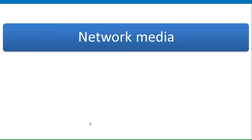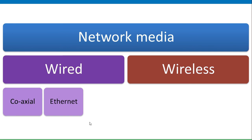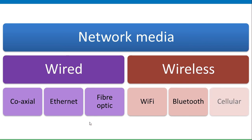Looking at network media, I'll divide it into two categories: wired and wireless. Wired media can be broken down into coax, Ethernet, and fibre optic. Coax and Ethernet are both copper cable. Wireless can be classed as Wi-Fi, Bluetooth, and cellular networks. I'm going to look at Wi-Fi and Bluetooth briefly — I'm not going to talk about cellular in this video.